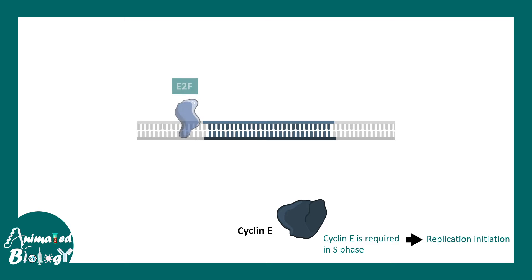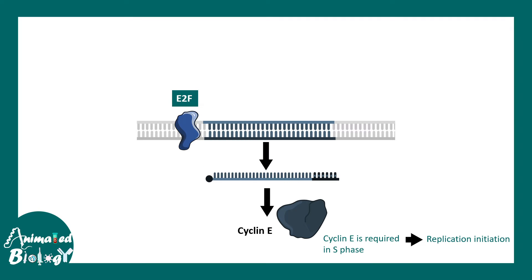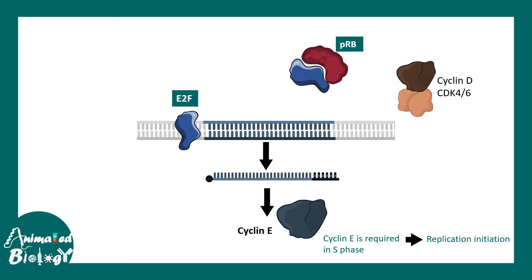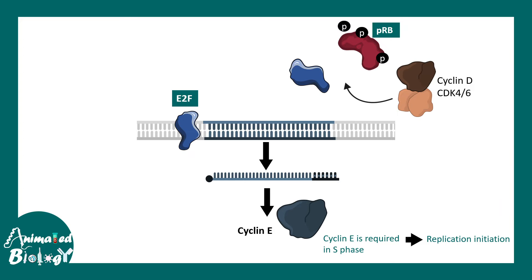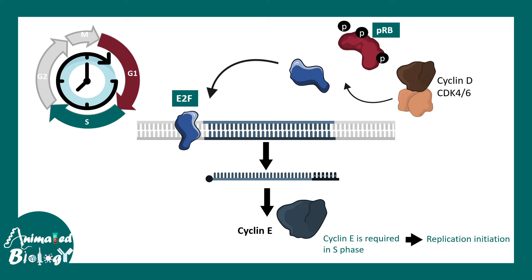When E2F binds to DNA, cyclin E mRNA and protein are produced, which is important for replication progression. However, PRB sequesters E2F and prevents it from binding to DNA. Cyclin D and CDK4 are responsible for telling PRB to back off: if the environment is favorable — growth factor present, enough nutrients — cyclin D-CDK4 phosphorylates PRB, causing it to be removed from the E2F complex. This de-inhibits E2F, allowing it to bind DNA and progress the cell cycle from G1 to S phase.